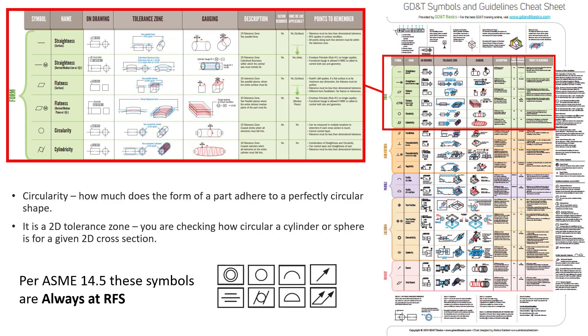So I've blown it up a little bit here on the left. So you can see it right here, circularity. It's in that green area there. Those are all the form controls. There is only four, but we show six. And that's because a couple of them here we have when it's applied to a feature of size.